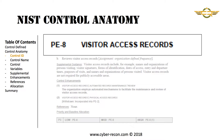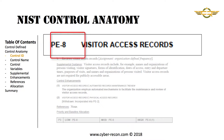The first thing to note is the control ID. This is PE-8 for this control, which is physical and environmental. PE-8 is a main control with two enhancements. If this were one of the enhancements, it would read PE-8(1) or PE-8(2).